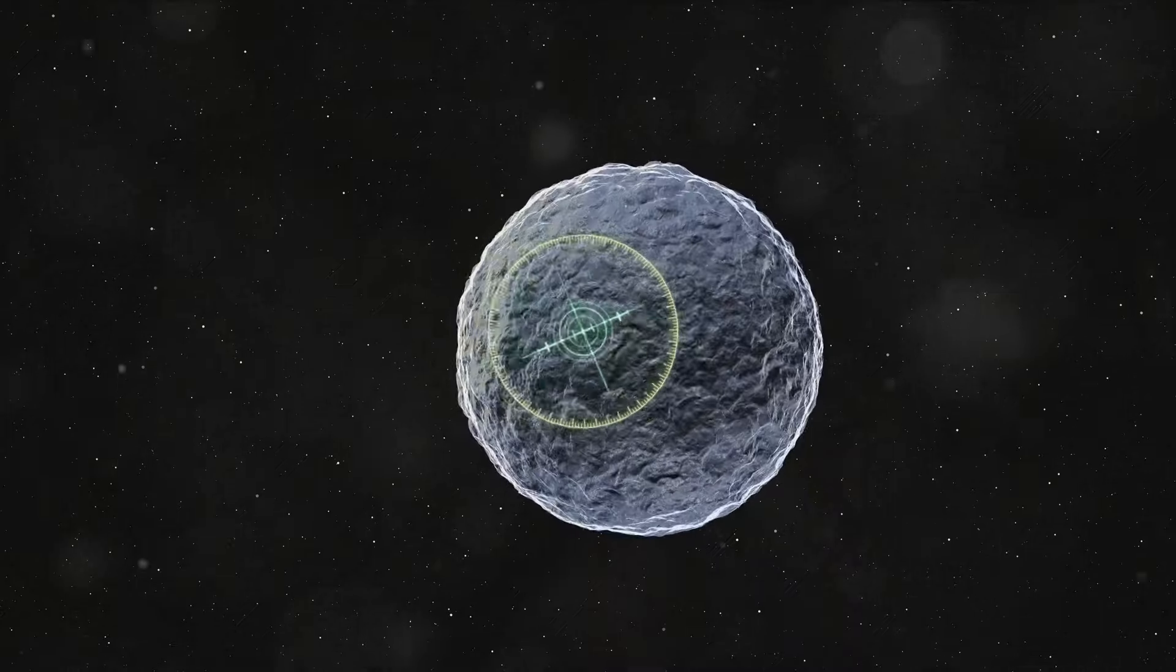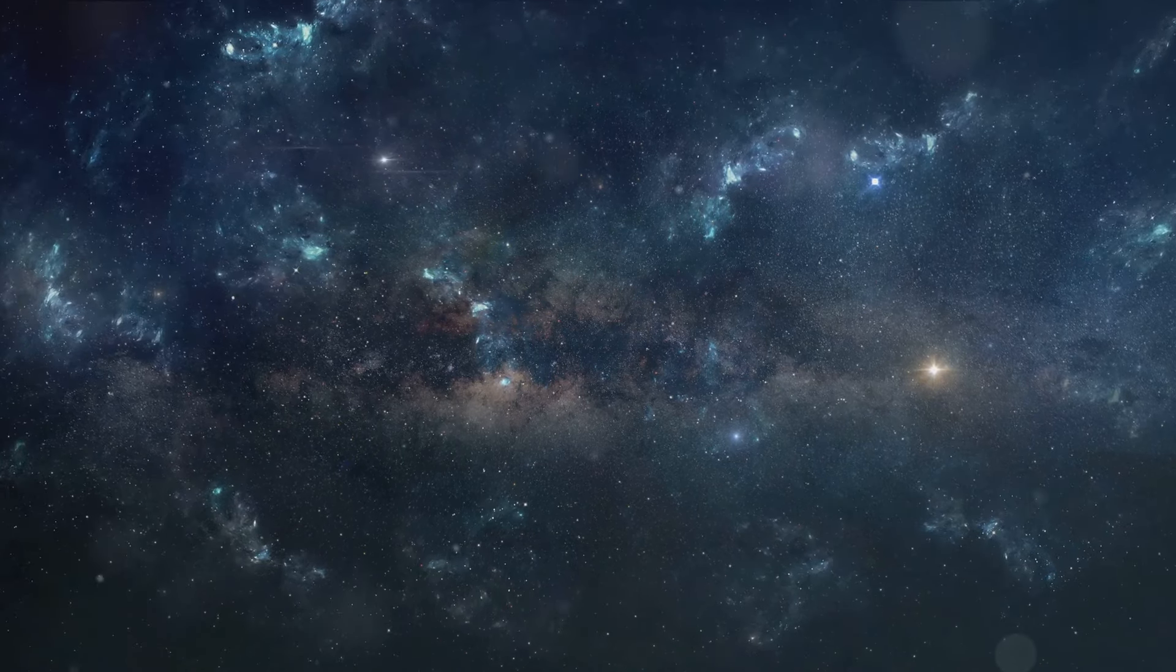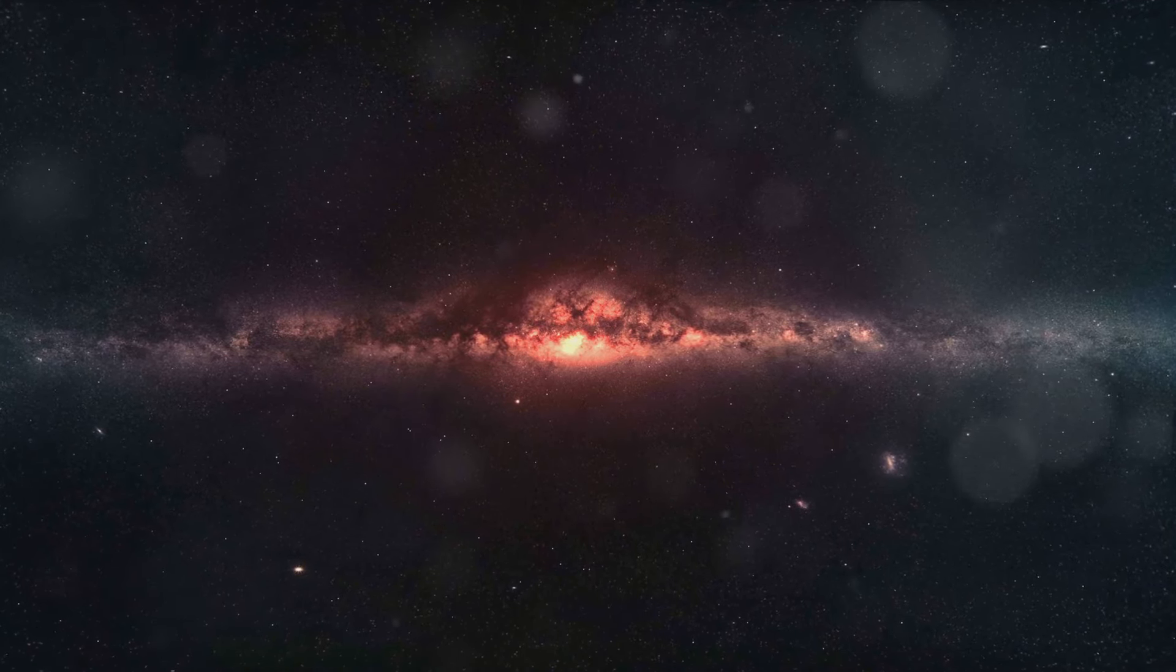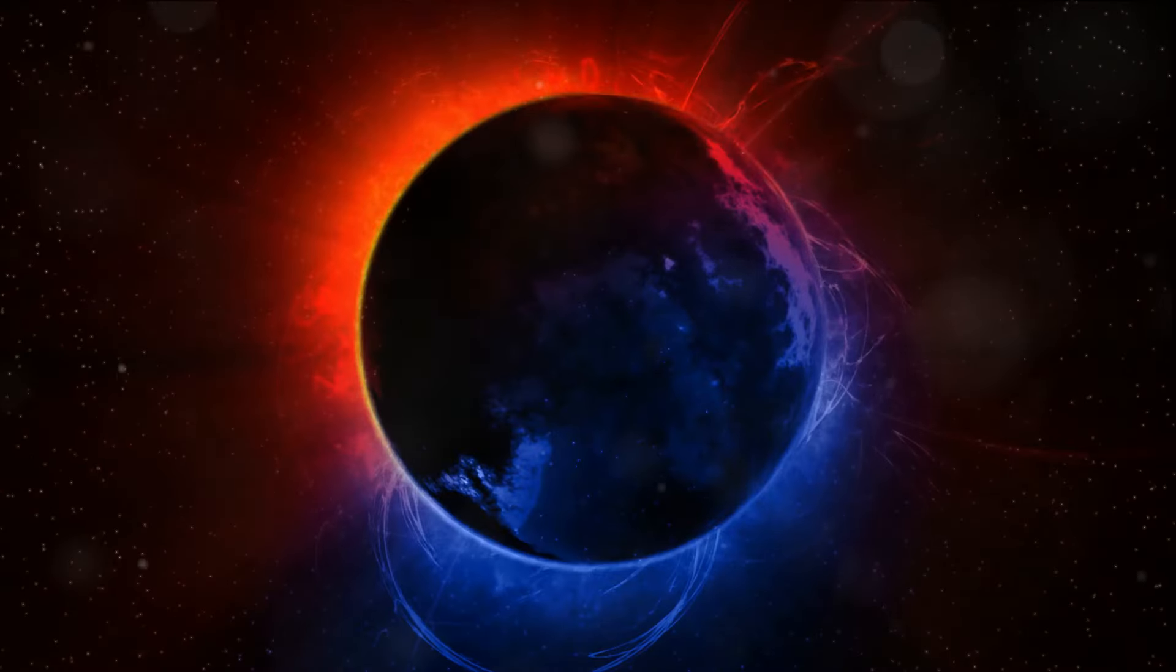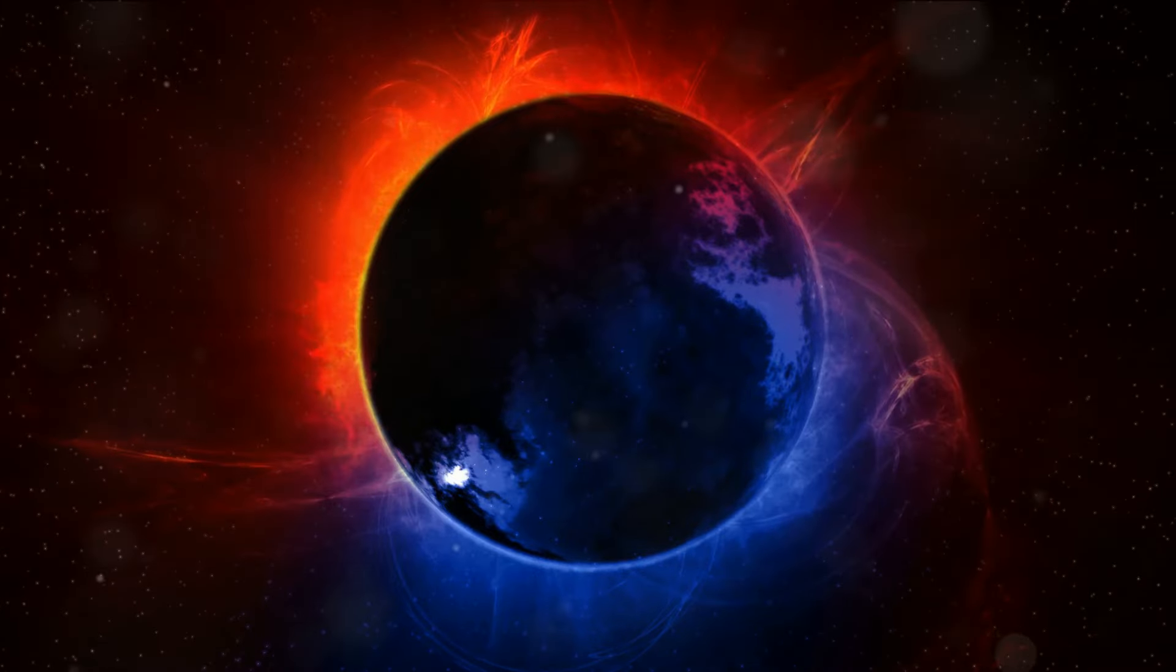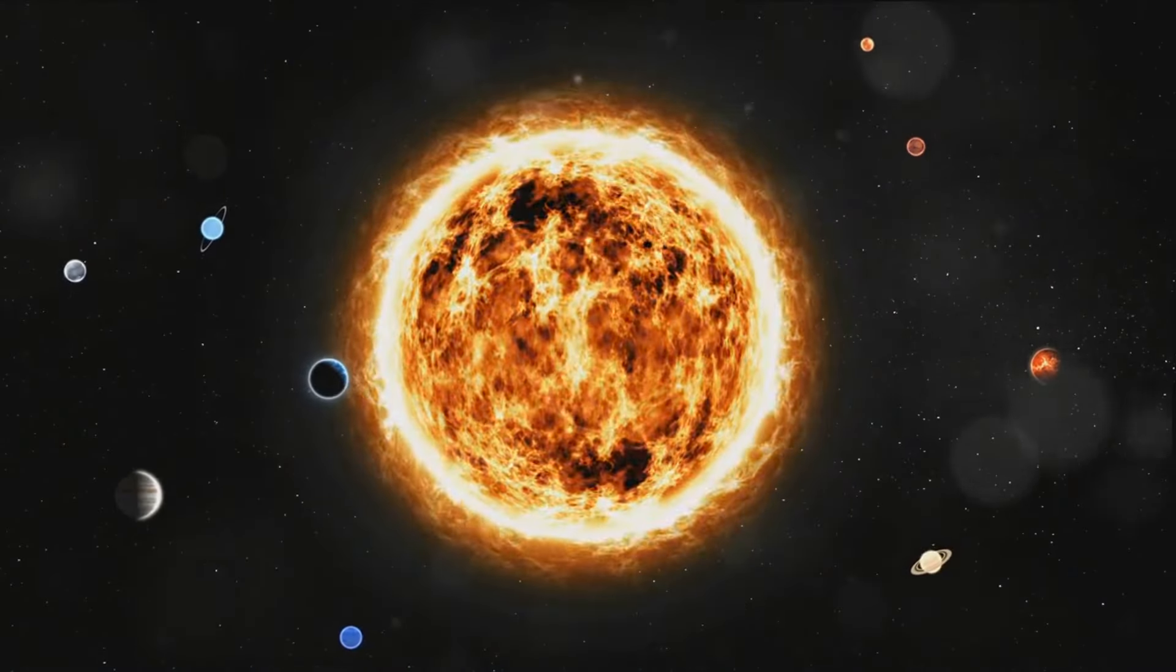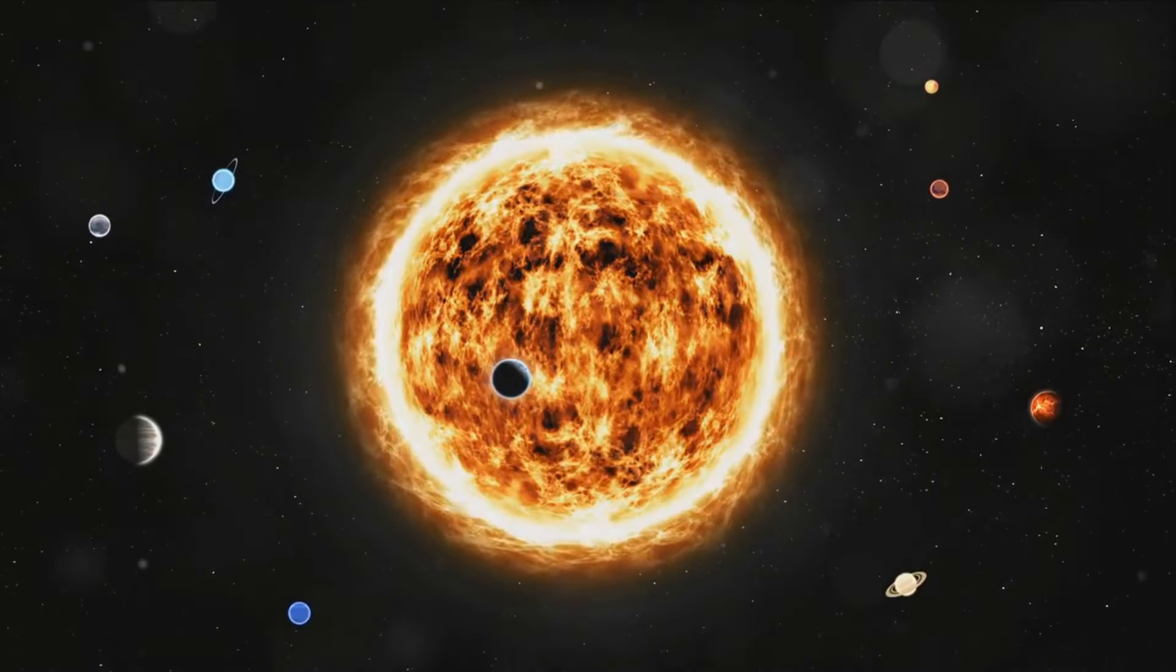Yet the most compelling aspect of LHS 1140b that truly arouses our curiosity is its location. It orbits in a comfortable zone around its star where conditions are thought to be favorable for the existence of liquid water. However, the universe is a realm of unpredictable extremes and stark contrasts. What might seem familiar can also be deceptive. LHS 1140b, with its Earth-like qualities, orbits a red dwarf star, a celestial body infamous for its volatile nature and unpredictable energy emissions, providing a stark contrast to our sun's relative stability and predictable behavior.